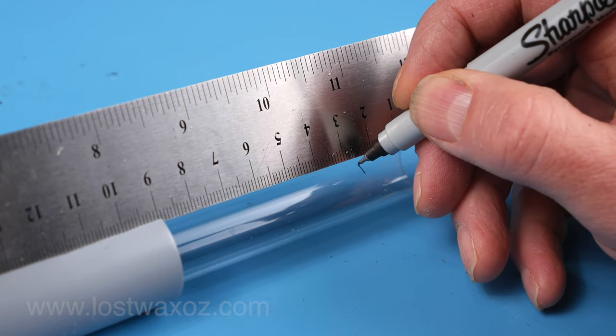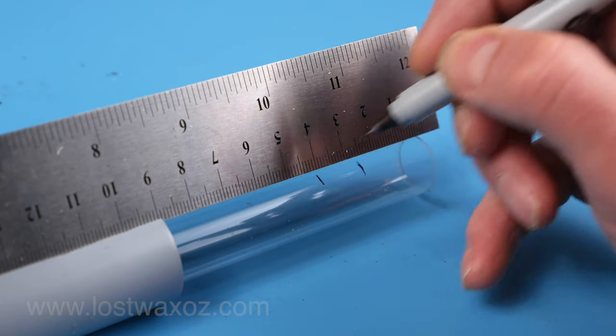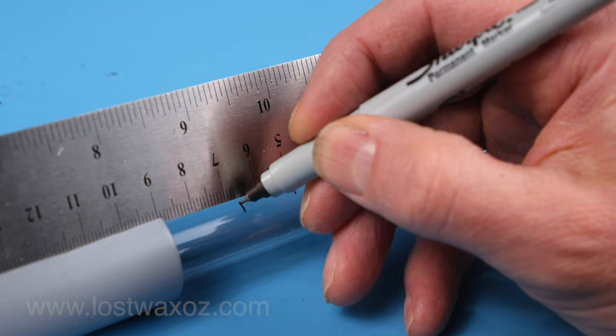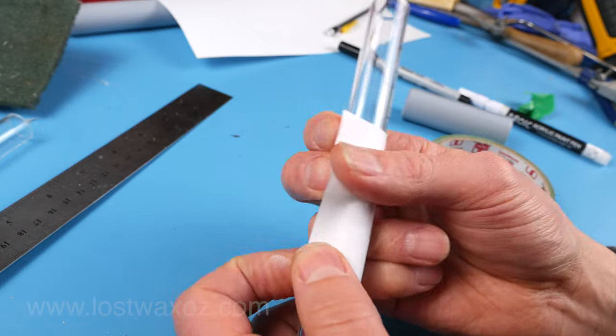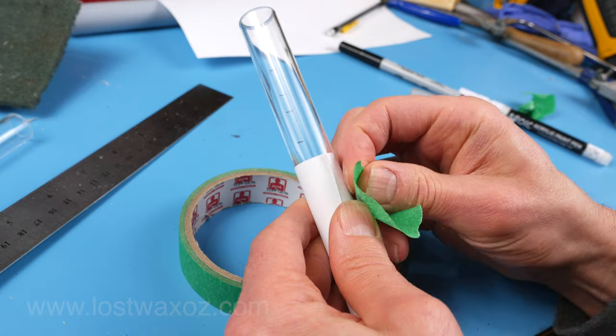Measuring from the front edge of the acrylic tube mark it at 26, 40, 49 and 66 millimeters. Wrap a rectangular piece of paper around the tube lining up the ends to act as a guide for making nice straight lines.